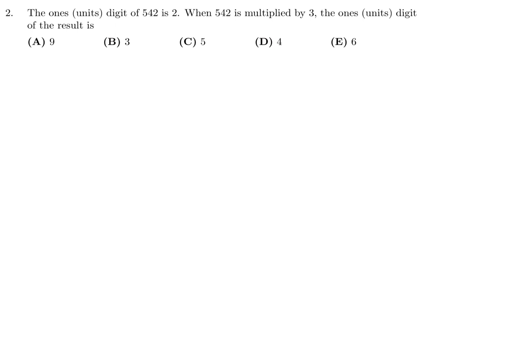The ones digit of 542 is 2. When 542 is multiplied by 3, the ones digit of the result is: 542 multiplied by 3 is 1,626. The ones digit of this number is 6. Therefore, number 2, the answer is E.